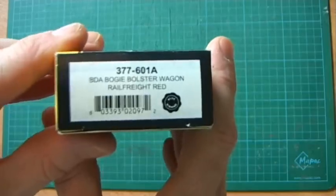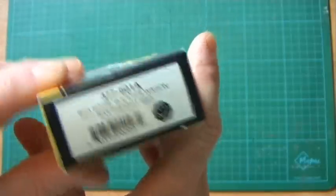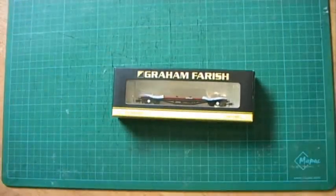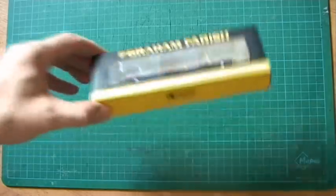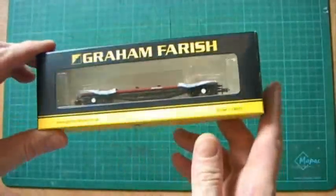This number, catalog number on this one is 377601A. This is available in three variants: in load haul livery, in this rail freight red stripe, or rail freight red rather, and in EWS.